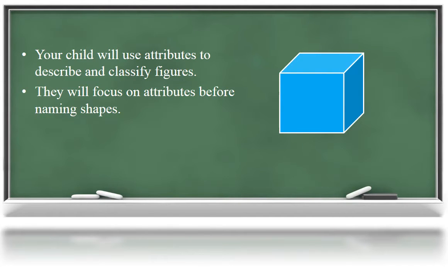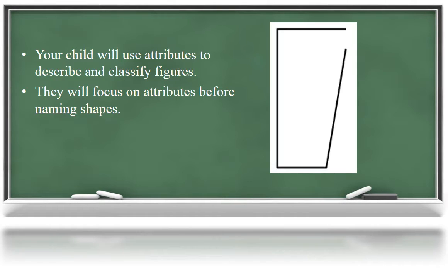Your child will focus on identifying attributes of figures and shapes before naming them. This first figure is not flat. Looking at this figure, they might say it is flat and made of straight line segments, but not all the line segments meet at endpoints. And it is also open.